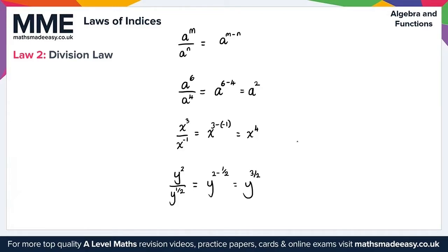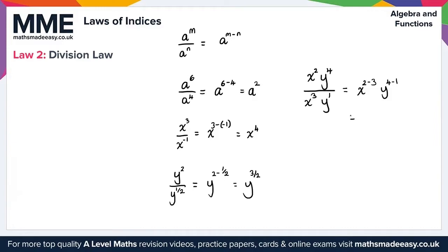With multiple variables in division, for example x squared times y to the 4 divided by x cubed times y, we treat each variable separately. Applying the division law: x to the 2 minus 3, and y to the 4 minus 1. Simplifying, x to the 2 minus 3 gives x to the minus 1, and y to the 4 minus 1 gives y cubed. That covers everything for the division law.